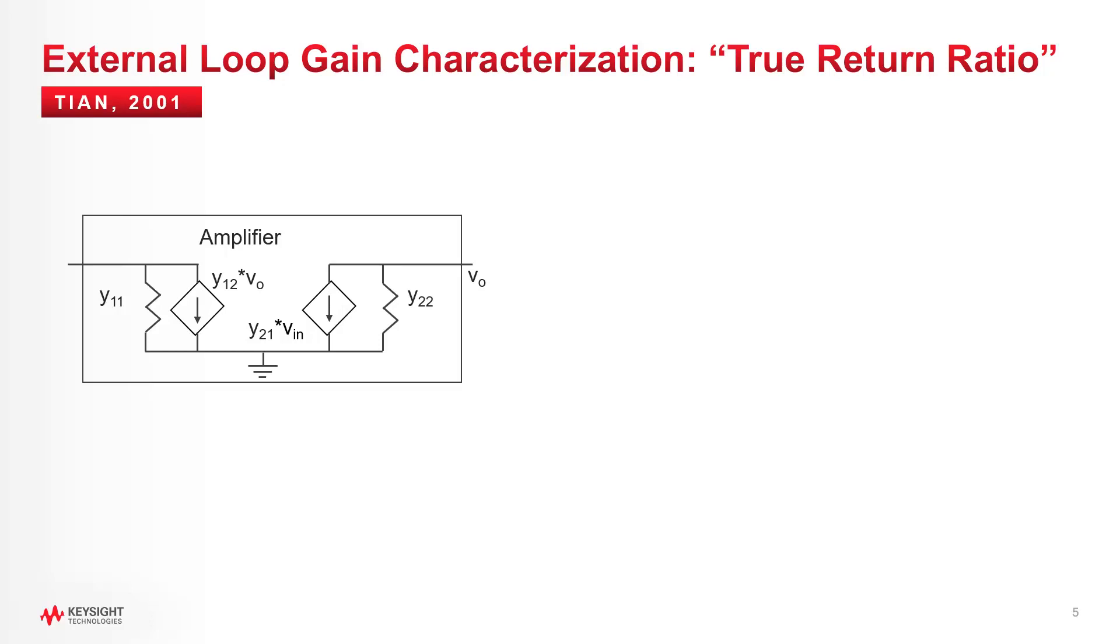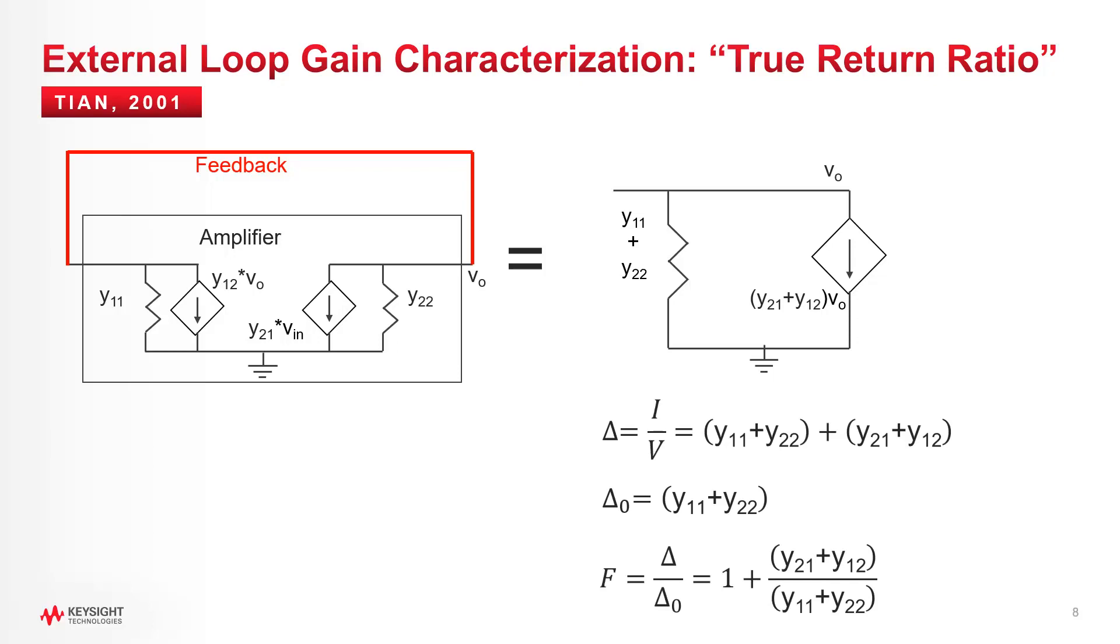I want to switch gears now and review a loop gain derivation that attempts to stay true to the return ratio concept from Bode, and this was derived by Michael Tian. It's called True Return Ratio. Basically, this approach starts by taking a bilateral amplifier, this is kind of like the Hurst approach I showed in video number three, and then applying a simple short circuit feedback across the input and output terminals. Essentially, then you can collapse the resulting network into a one port because the input and output terminals now appear in parallel. And from there, it's easy to compute the determinant and then remove the active terms and recompute. And what you're left with is a formula that represents return difference containing the return ratio, which Tian coined True Return Ratio. I really like this technique, but to be honest, I don't like the name.